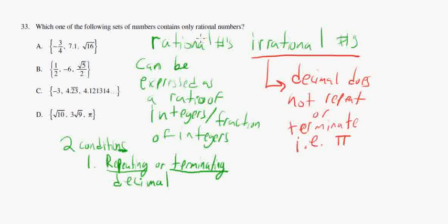So, question 33 asks for which one contains just rational numbers. So, we want to look for the set of numbers that has numbers that have repeating or terminating decimals. If it has one of these cases where it has a non-repeating, non-terminating, then it's not considered a rational number.